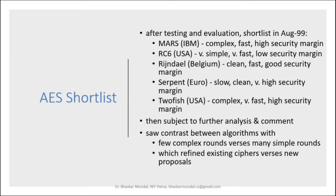Rijndael, submitted from Belgium, had a clean design, fast computation, and good security margin. Serpent, from Europe, was slow with clean code but had a very high security margin. Twofish, from the USA, was complex, very fast, with a high security margin. Based on all these criteria, Rijndael was found to be clean, fast, with good security margin and lesser complexity.